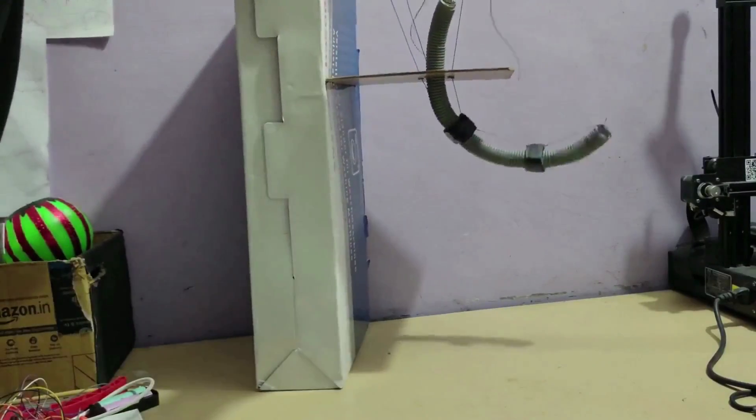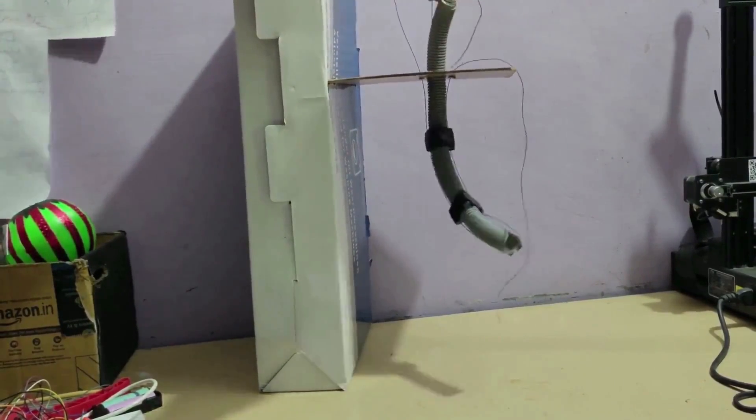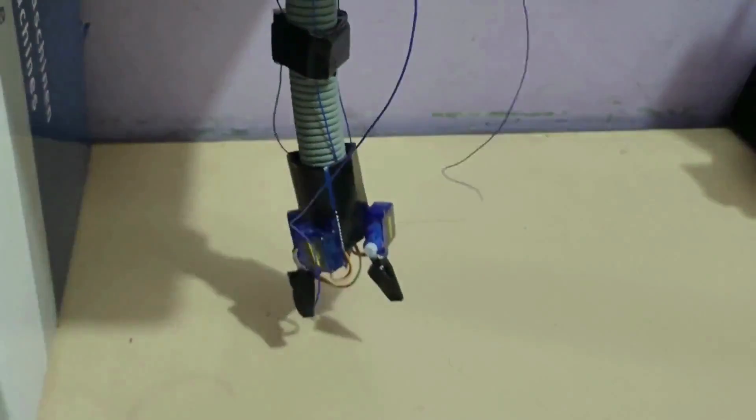Now I made a stable stand for the project. After attaching our gripper to the pipe, it looks like this.